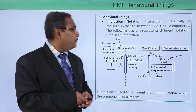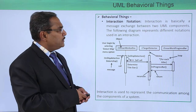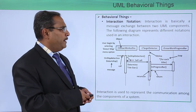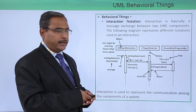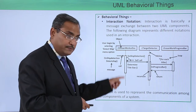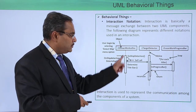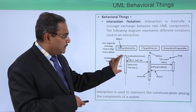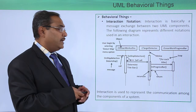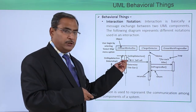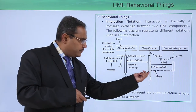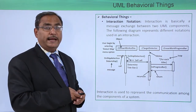Let's look at an example for better understanding — the interaction notation. Interaction is basically a message exchange between two UML components. The following diagram represents different notations used in an interaction. These are known as objects, this dotted line is known as the timeline, and this is known as the activation. From this particular component to that component, some messages are being passed and control is returning back. This is the basic interaction notation diagram.